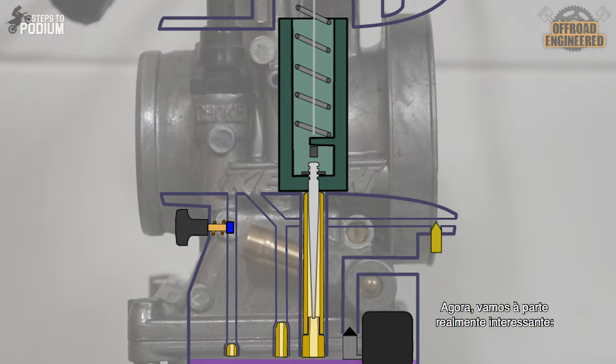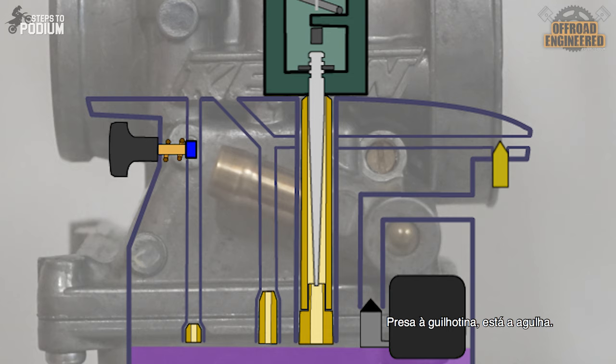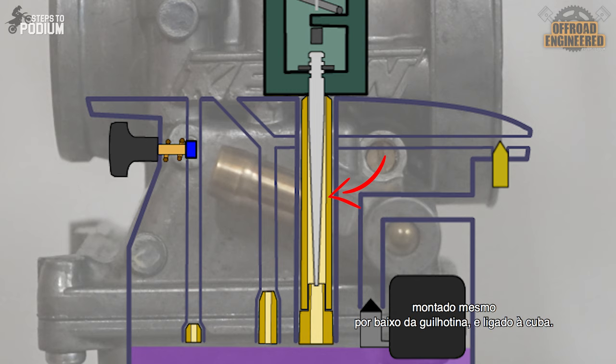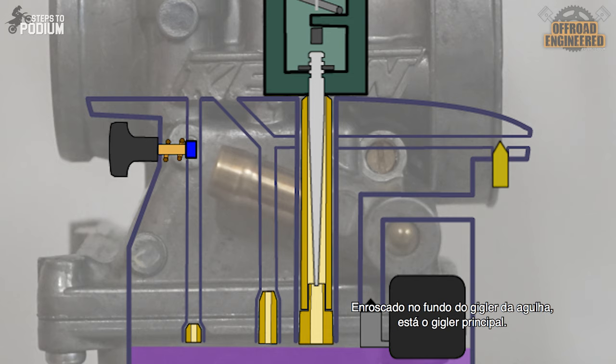Now for the really interesting part. On the slide there's the jet needle. This needle has a tapered shape and fits into the needle jet which is mounted directly under the slide and connects to the float bowl. When the slide is fully down, the jet needle blocks completely the fuel flow from the float bowl to the main air passage. Screwed onto the bottom of the needle jet there's the main jet which is accessible through the float bowl.